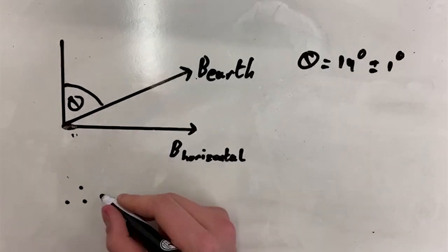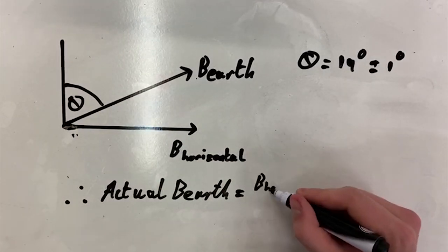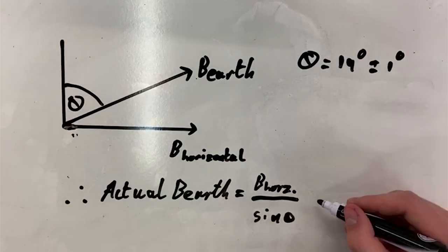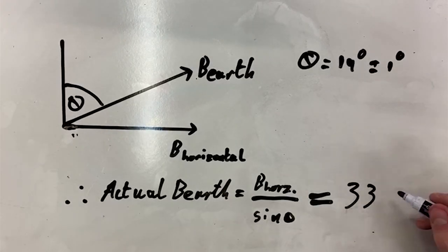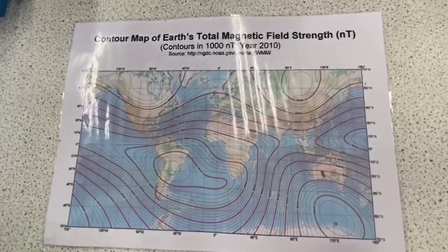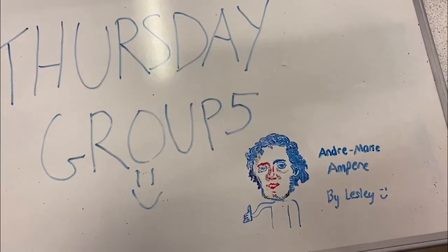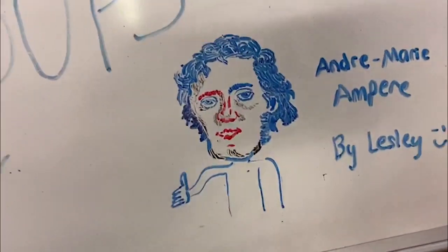So to get the actual magnetic field of Earth, we need to divide our value by sine of the tilt. We got our value to be 33 ± 2 micro teslas. Real results from proper scientists range from 25 to 65 micro teslas. We were content with our results, and so am I.